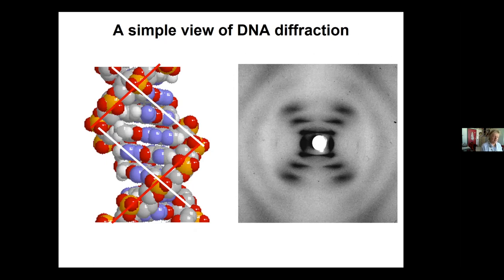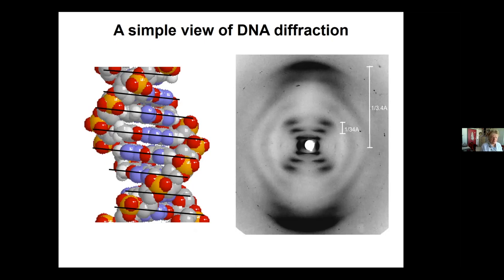That's the X-shaped pattern corresponding to the backbones, and then perpendicular to that you've got the bases going across - another periodicity. That vertical periodicity in the B-form of DNA corresponds to the base pairs stacking one on top of the other. You've got another periodicity turning up at the top of the diffraction pattern - in the case of B-DNA the pitch of the helix is about 34 ångströms, with 10 base pairs per turn and a separation between base pairs of about 3.4 ångströms. This is an iconic type of diffraction pattern, taken from the Daresbury laboratory.